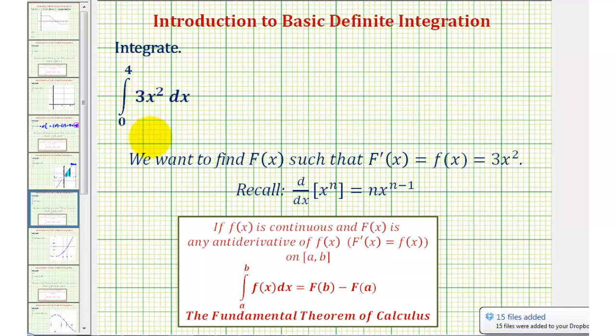Very soon we'll have a list of anti-derivative formulas, but for right now, we'll find the anti-derivative based upon what we know about derivatives, meaning we want to find a function, big F of x, such that its derivative is equal to three x squared.